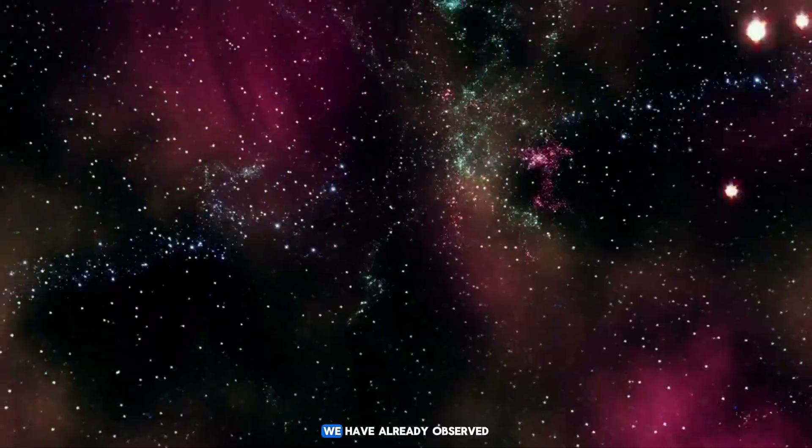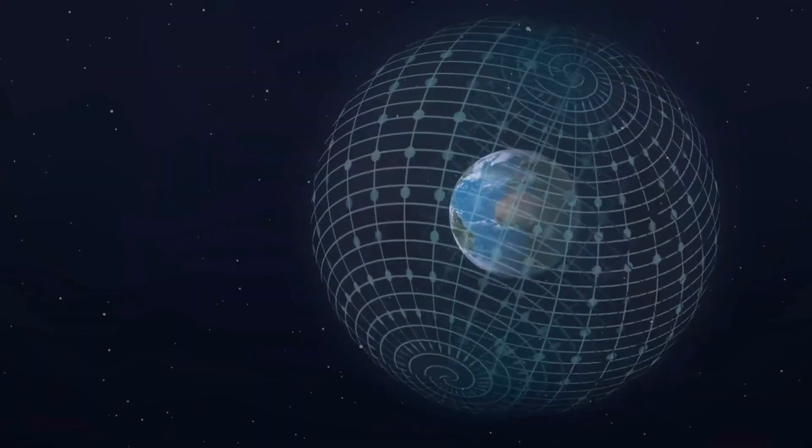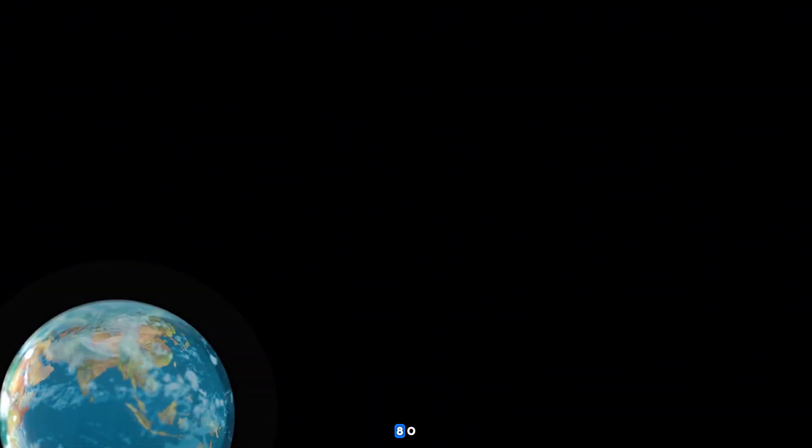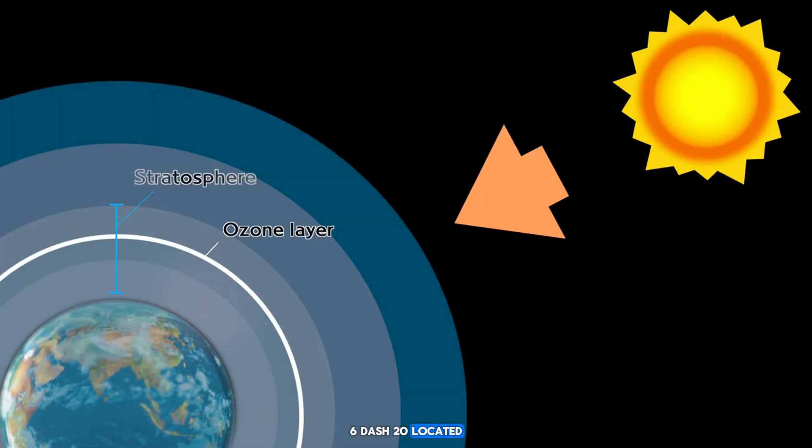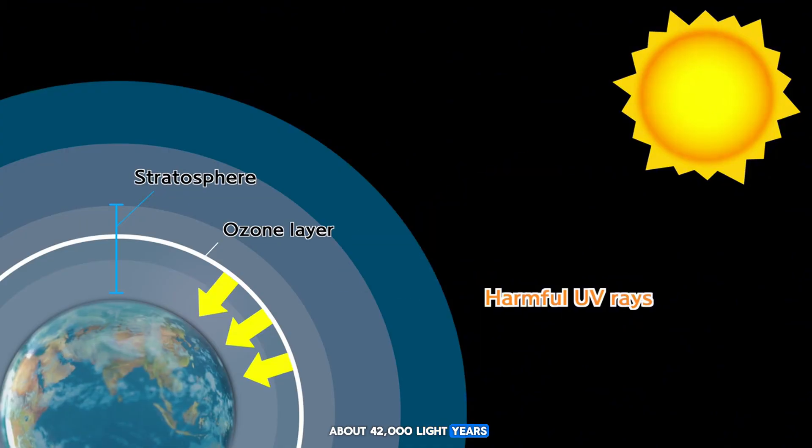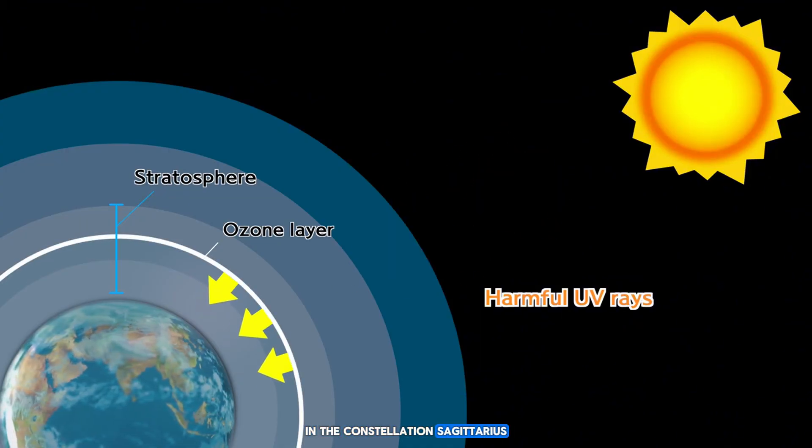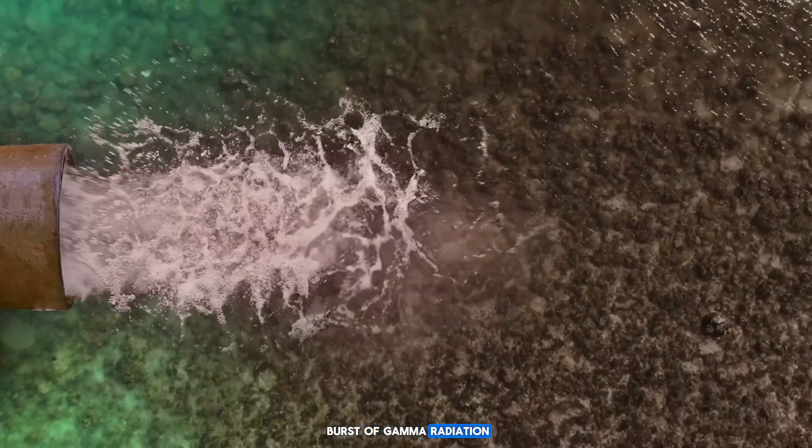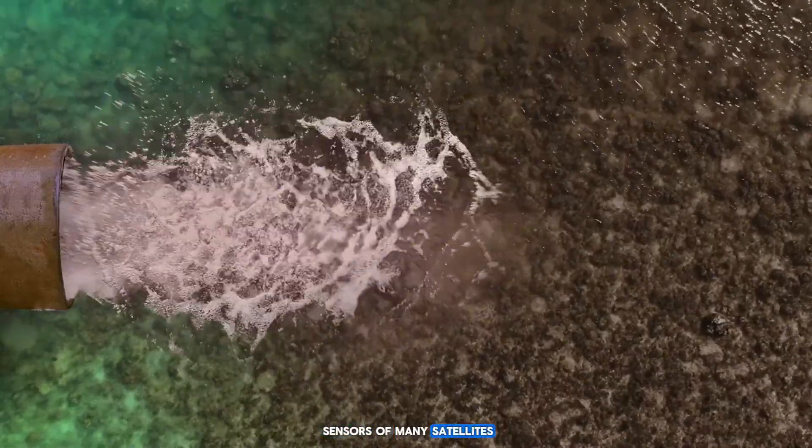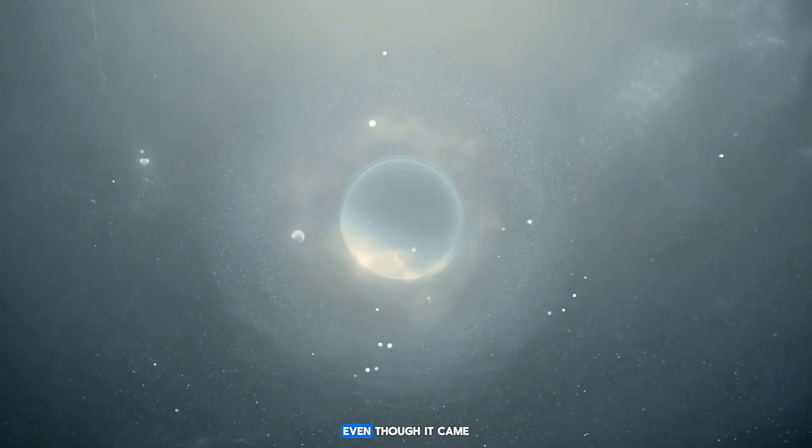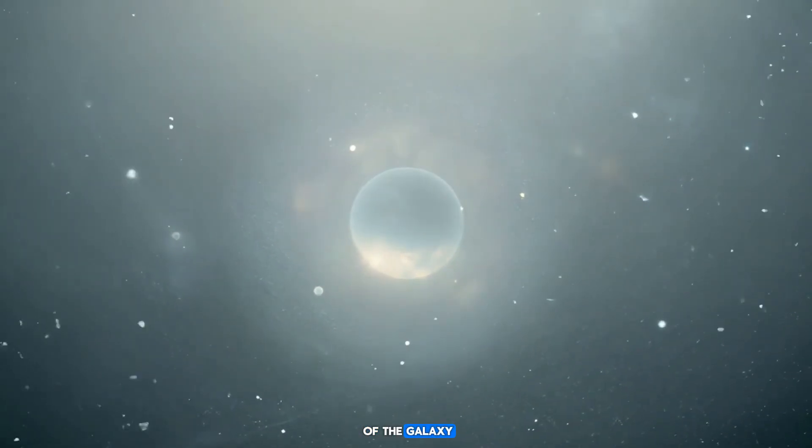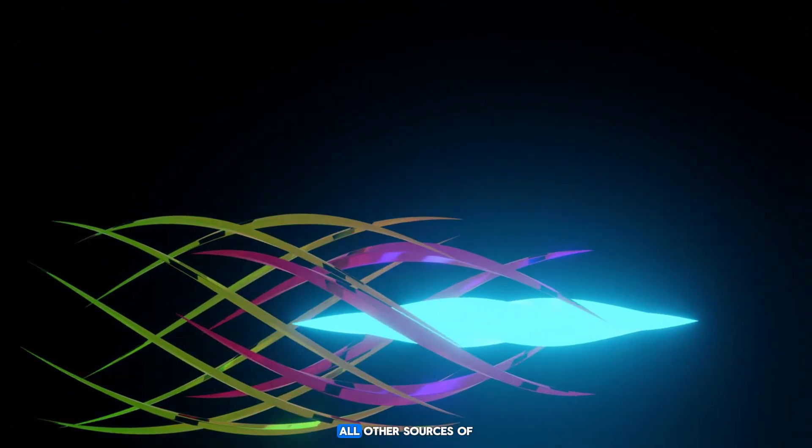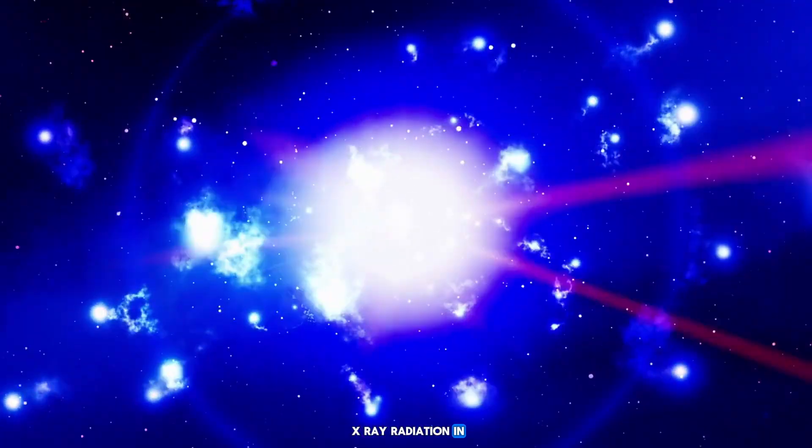And this is not just theory. We have already observed its effects. In 2004, a magnetar called SGR 1806-20, located about 42,000 light-years from Earth in the constellation Sagittarius, emitted such an intense burst of gamma radiation that it caused the sensors of many satellites to malfunction, even though it came from the other side of the galaxy. For a fraction of a second, this magnetar outshone all other sources of X-ray radiation in the sky combined. If it had been just 10 light-years closer, Earth would have been in danger.